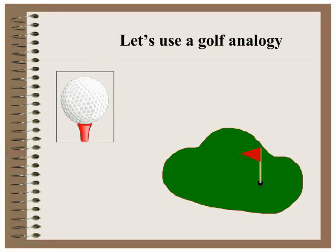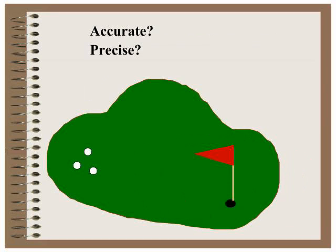So let's use an analogy for accuracy and precision. We're going to use a golf analogy and this is the true value, getting the hole in one, and we're going to look at data with our golf balls and decide whether these data points would be accurate, precise, or neither. So let's look at our first example.